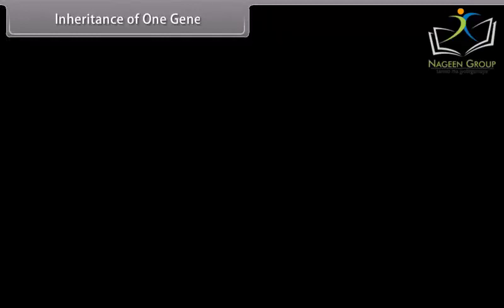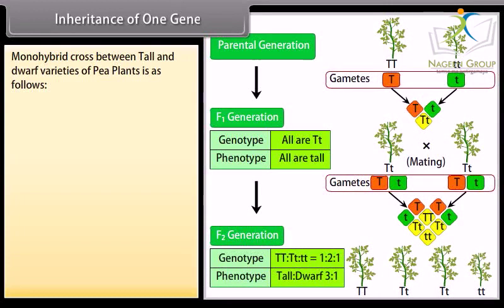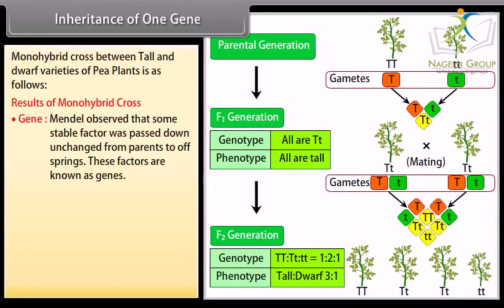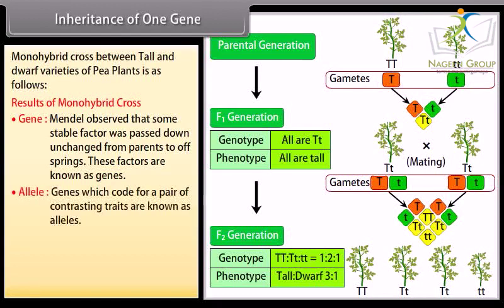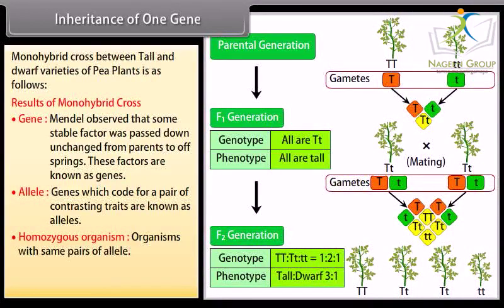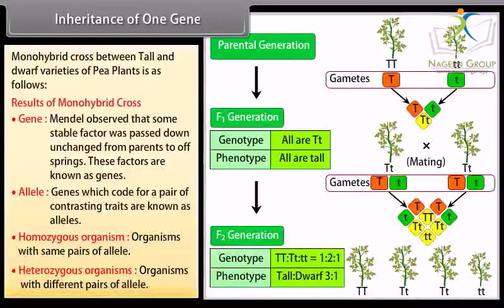Inheritance of one gene. A monohybrid cross between tall and dwarf varieties of pea plants is as follows. Mendel observed that some stable factor was passed down unchanged from parents to offspring — these factors are known as genes. Alleles are genes which code for a pair of contrasting traits. Homozygous organisms have the same pairs of alleles; heterozygous organisms have different pairs of alleles.